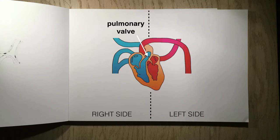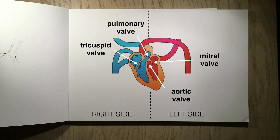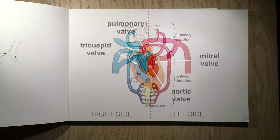And finally, the valves of the heart: the pulmonary valve, the tricuspid valve, the mitral valve, and the aortic valve. The valves of the heart have an important role in stopping backflow, a potentially damaging effect with the blood being pumped in the heart.